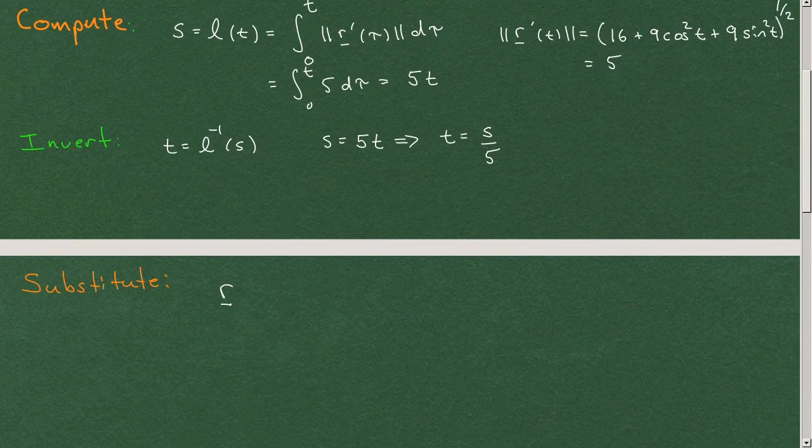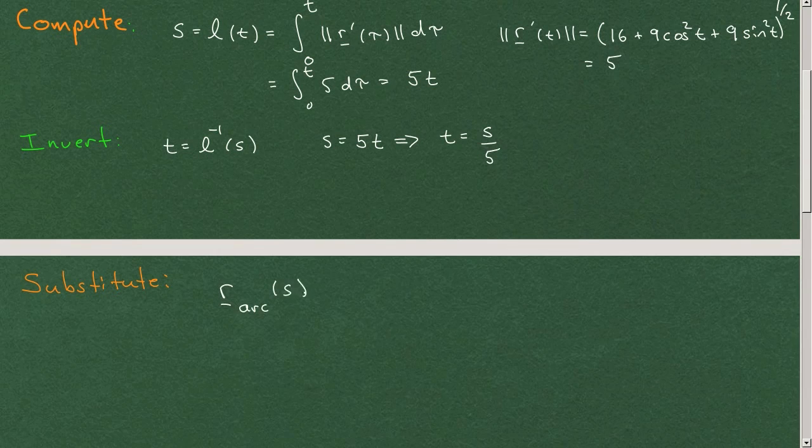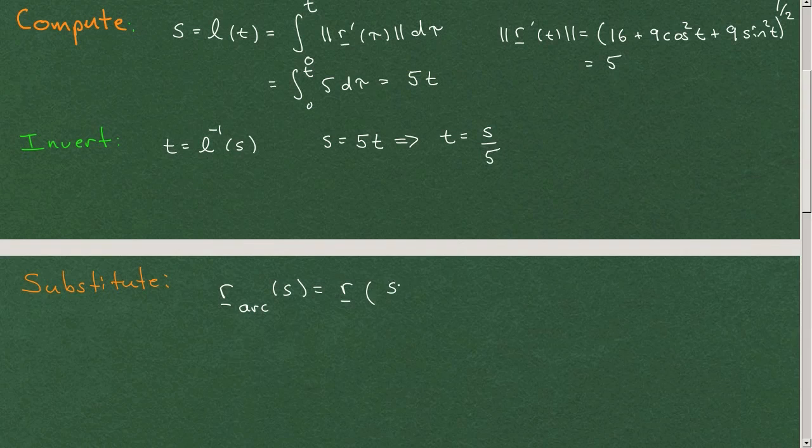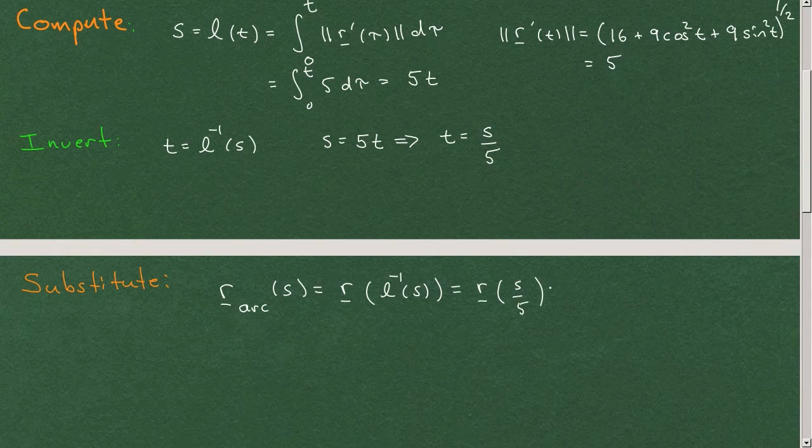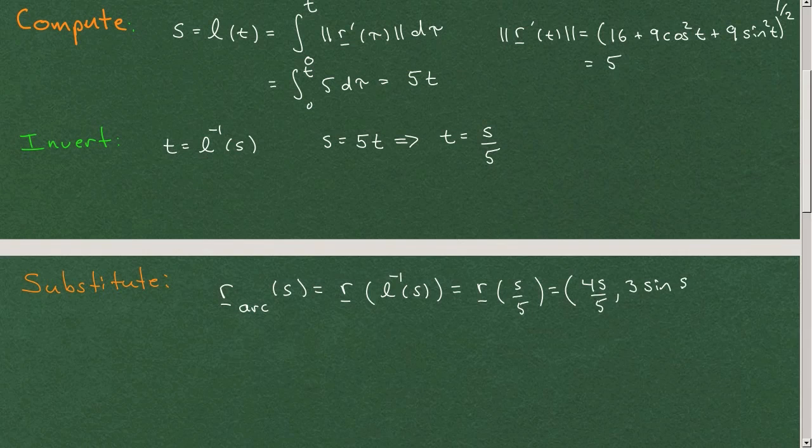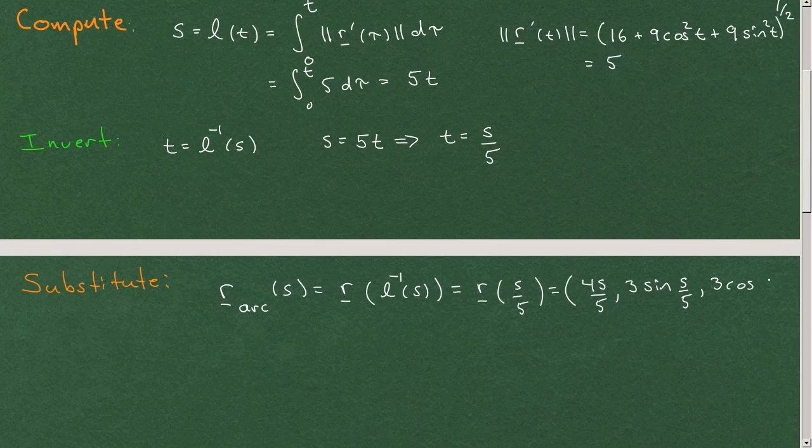That is to say, our parameterization by arc length, which I'll write as r_arc of s, is given by our original parameterization, where we substitute in for t, s over 5. We substitute this inverse function, which in this case is simply s over 5. That will be equal to, now you'll have to go back and look. That will give us 4s over 5, 3 sine s over 5, 3 cosine of s over 5.